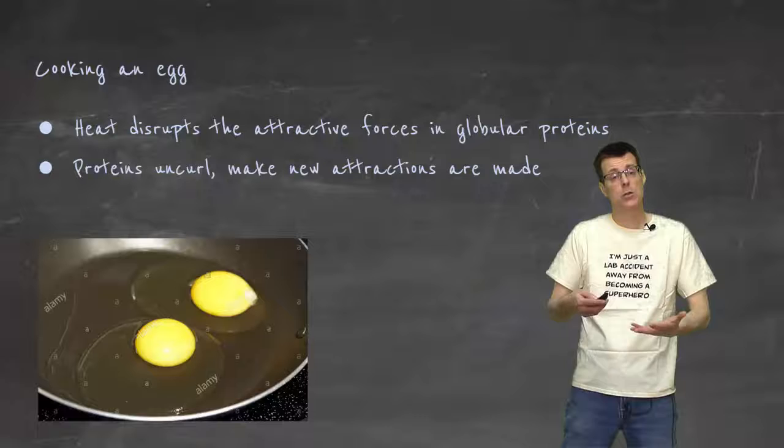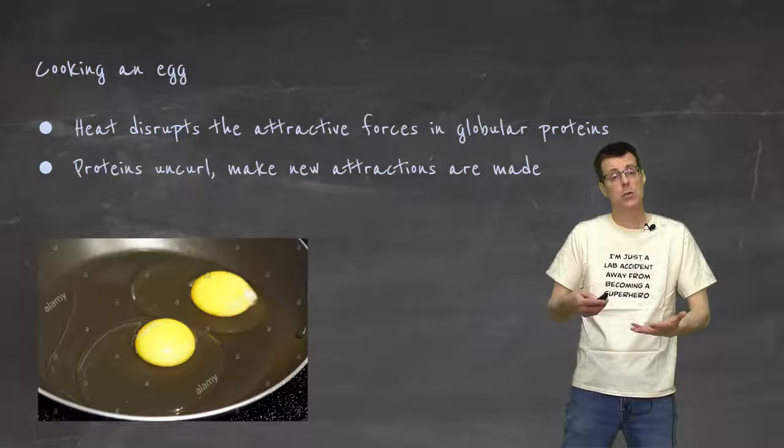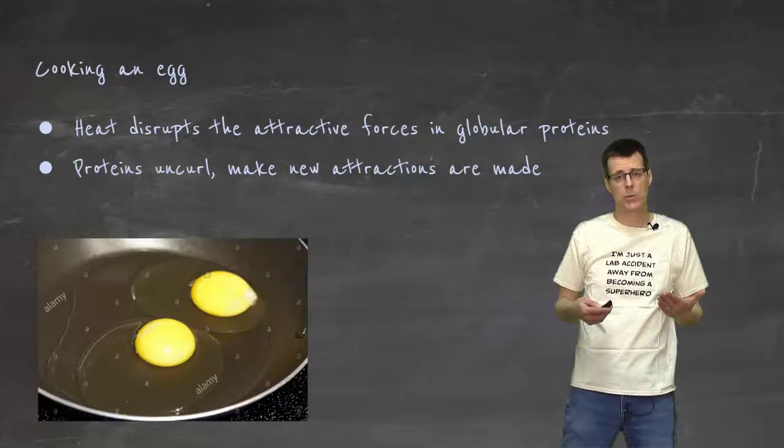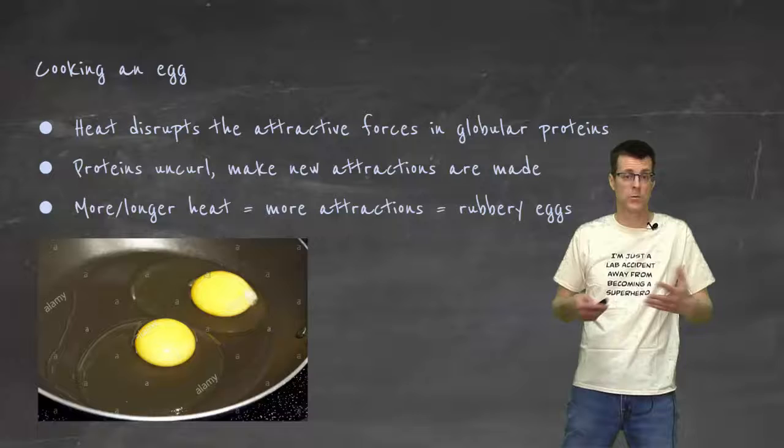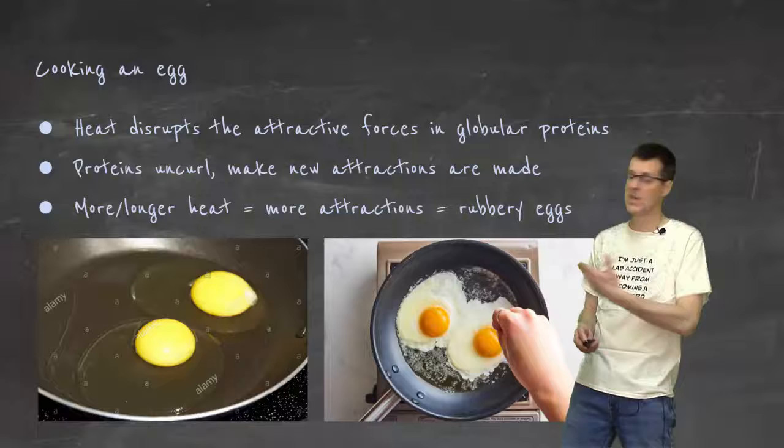They start to open up and loosen up. And then as they uncurl, they start to make new attractions which then kind of hold together, and they interact with that new structure. This interacts with the light in a different way, so your egg starts to turn white. The more of those interactions you form, the more of those new interactions you form, the more cooked, the more rubbery, the more solid the egg becomes. And of course, the less see-through it is and the more white it is.